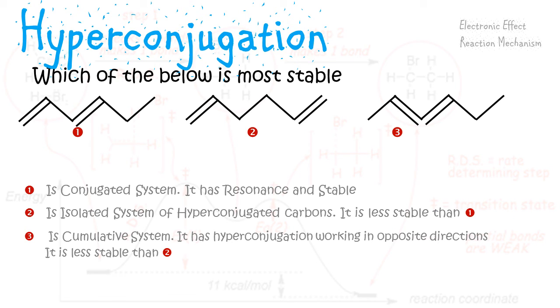So it is less stable than two. So stability of one is greater than stability of two, is greater than stability of three.